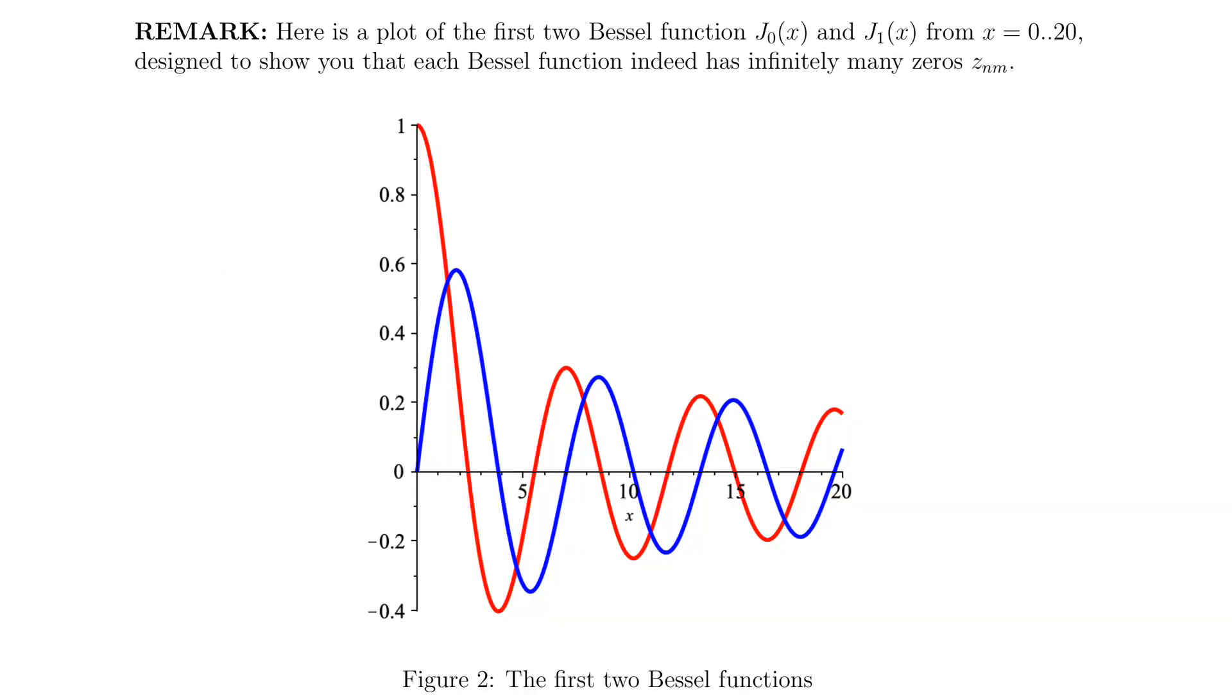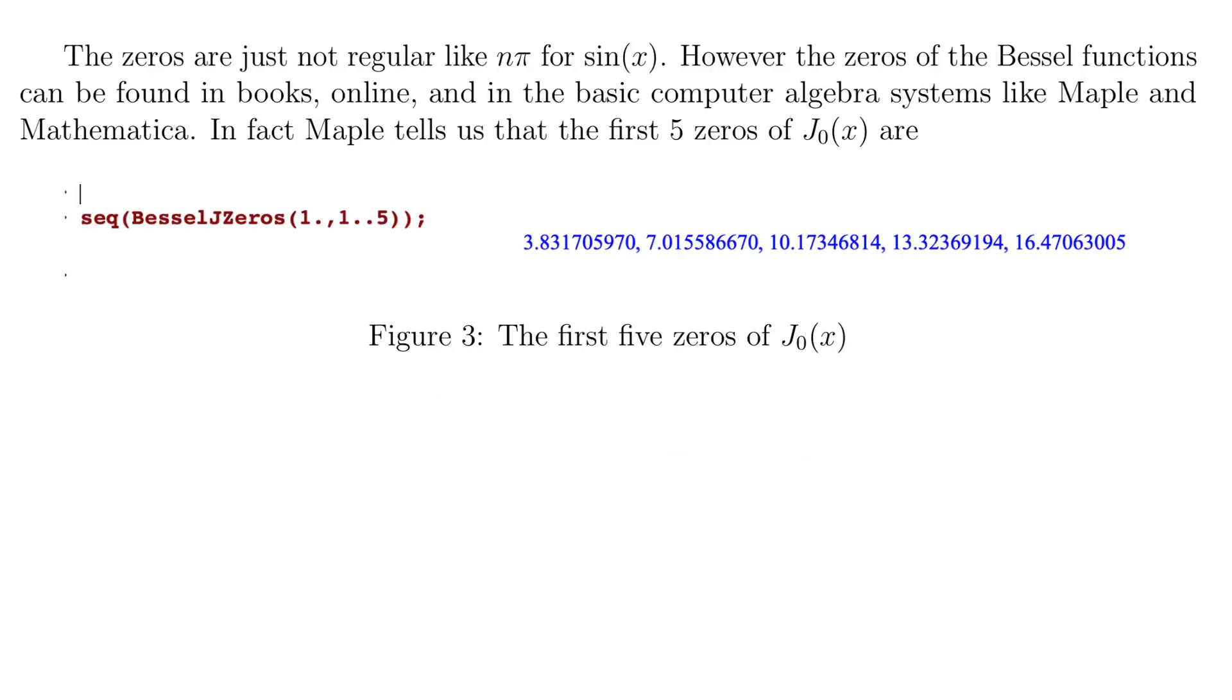Here's a plot of the first two Bessel functions, j0 and j1, from 0 to 20, just to show you a picture of the fact that the Bessel functions have infinitely many zeros. The red one is j0 and the blue one is j sub 1. They look somewhat like the zeros of the trig function sine x, but those are very regular. The zeros of the Bessel function are not regular.